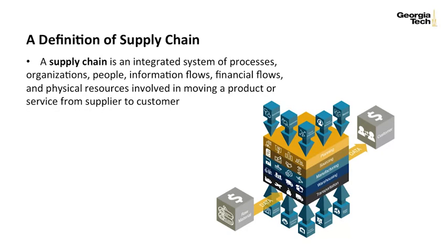Let's now take a look at a more complete definition of supply chain. Some elements of this definition that I'd like to focus on: first, the types of flows — information flows, financial flows, and physical resource flows. This introduces us to the concept that it takes more to move raw materials to end consumers than simply physical flows. Thought has to be put into planning, communicating, and paying for those physical flows.